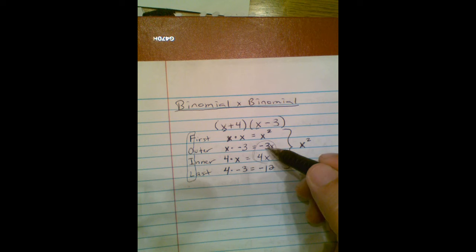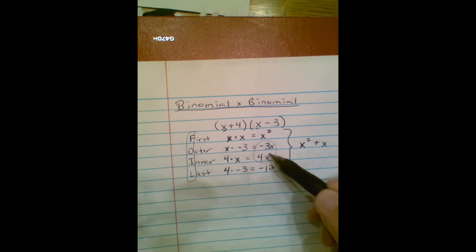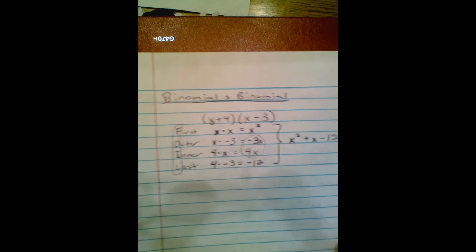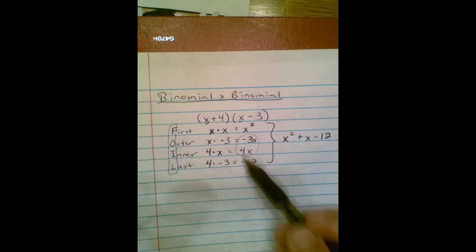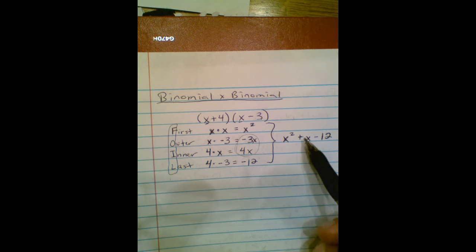Negative 3x plus 4x is going to be 1x. Combine those like terms. And then I've got minus 12 at the end. Minus 12 at the end is going to be the only constant. So I just brought that over. Negative 3x plus 4x is 1x.